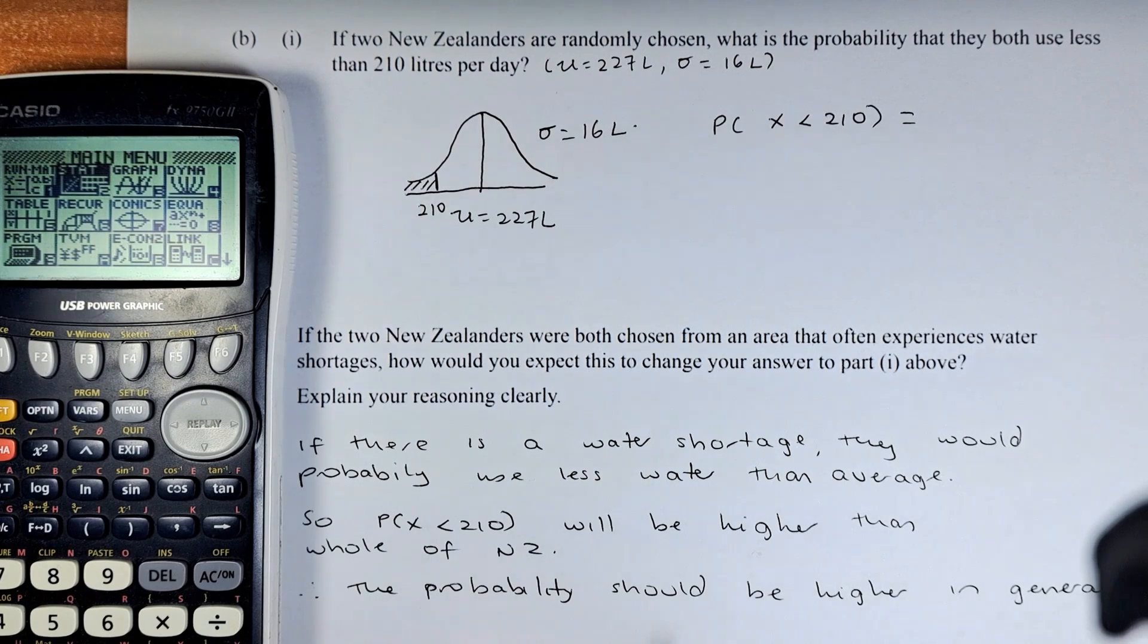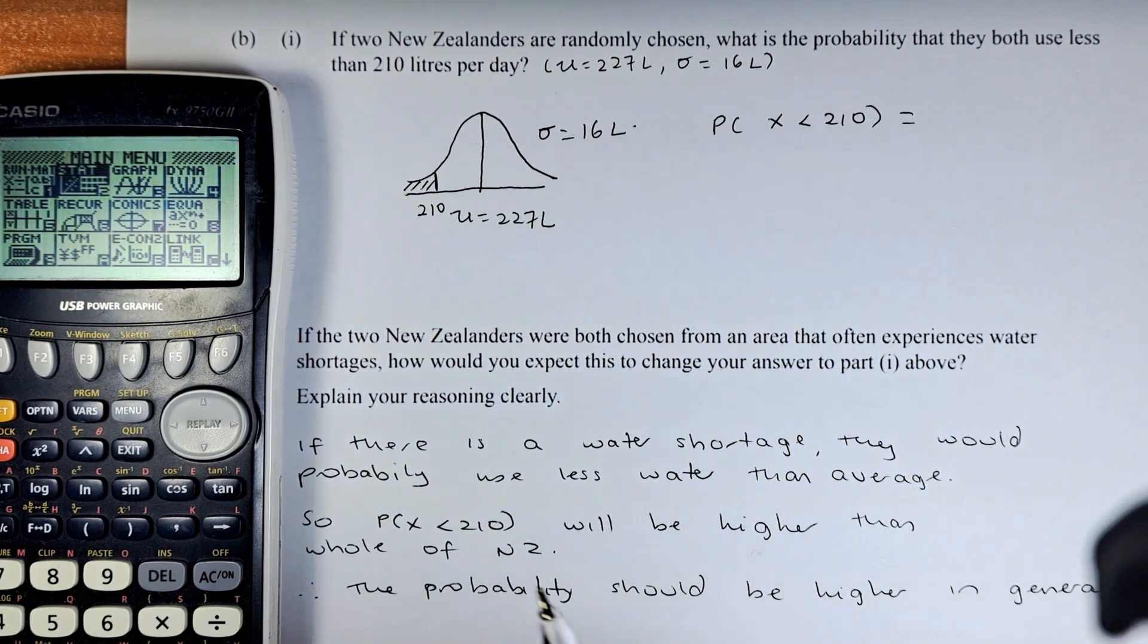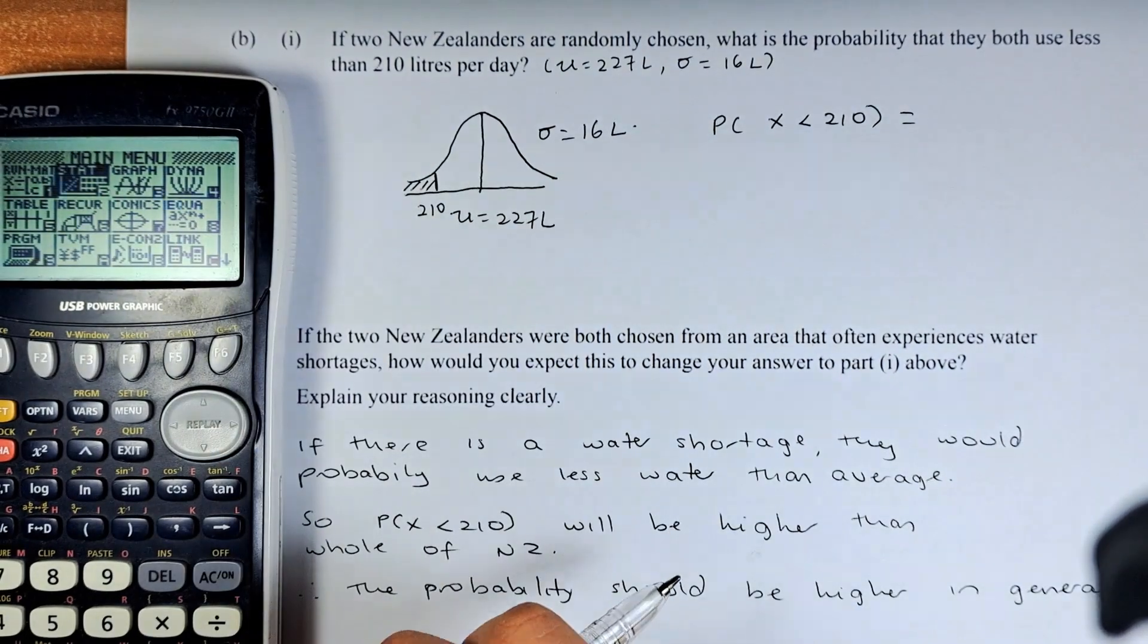But for purposes, due to time constraint, we are going to use the graphic calculator. So go to statistics, press the execute button.